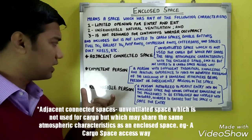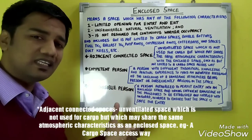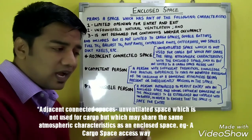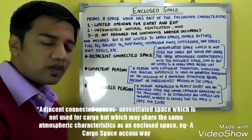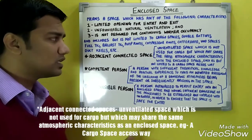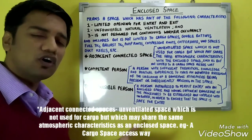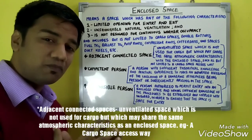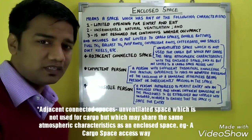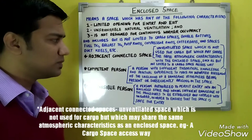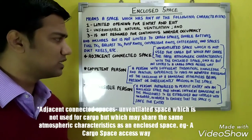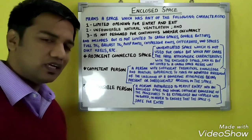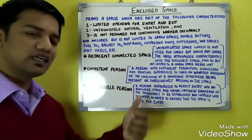The next definition under the enclosed space topic is adjacent connected spaces. As the name suggests, this is a space which is adjacent to your enclosed space. It is an unventilated space which is not used for cargo but which may share the same atmospheric characteristics as an enclosed space. For example, a cargo space accessway is an example of adjacent connected spaces.